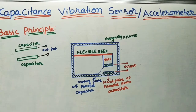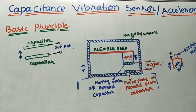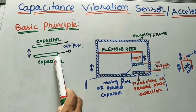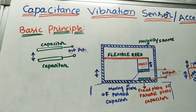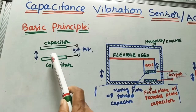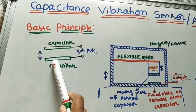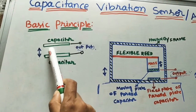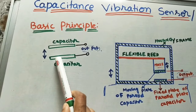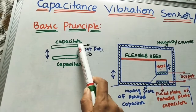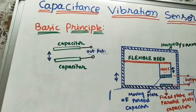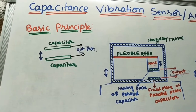Let us look at the basic principle of this axilometer. In it we are using two capacitors — thin parallel plates in which electrical energy is stored. Whenever vibrations from the machine occur, the capacitors also vibrate and the gap between them changes. The change in gap changes the output capacitance at the terminals, and that change in capacitance is used to find the vibrations of the machine.